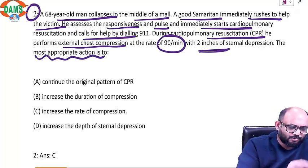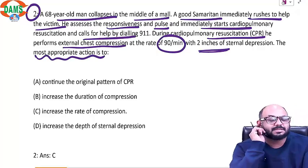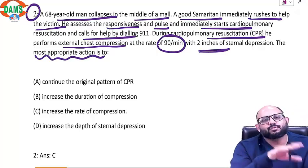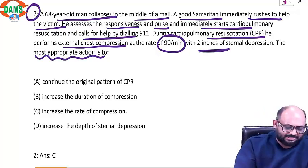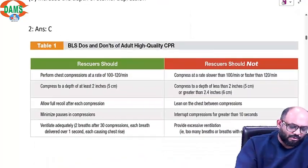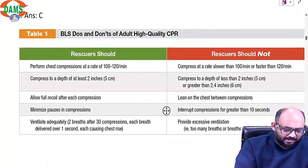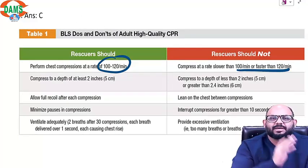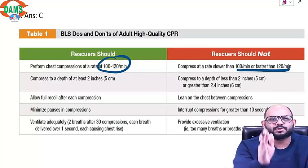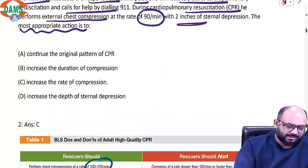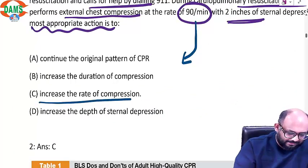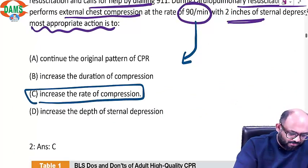The most appropriate action would be — this question fits into the do's and don'ts of high quality CPR. The five do's include a rate of 100 to 120, not less than 100 and not more than 120. He is doing compressions at 90 per minute, which is not acceptable. So you will increase the rate of compression.